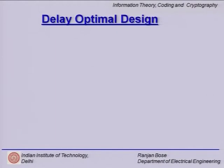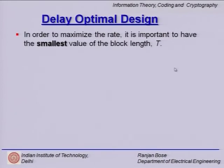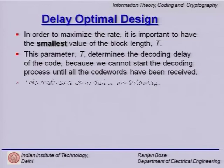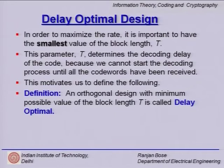Let us talk about delay optimal design. As we increase the size of t, we use more and more time slots, which increases the delay at the receiver side to get the decoded output. To maximize the rate it is important to have the smallest value of the block length t. The parameter t determines the decoding delay of the code because we cannot start decoding until all the code words have been received. An orthogonal design with the minimum possible value of the block length t is called delay optimal.